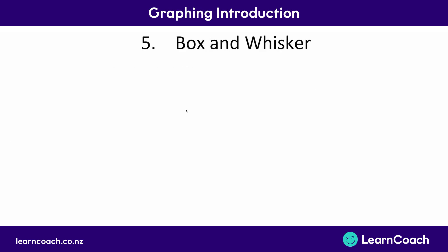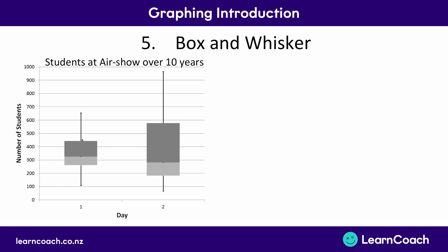Our last type of graph is a box and whisker graph, where you have two boxes each with whiskers at the top and bottom. This box and whisker plot is actually a more accurate representation of the dot plot we saw previously. This graph compares students at an air show over 10 years, comparing day 1 to day 2. It might look like more people came on day 2, but if we look at the median — the middle line — the median for day 2 is actually lower than the median for day 1. So on average, fewer people came on day 2.